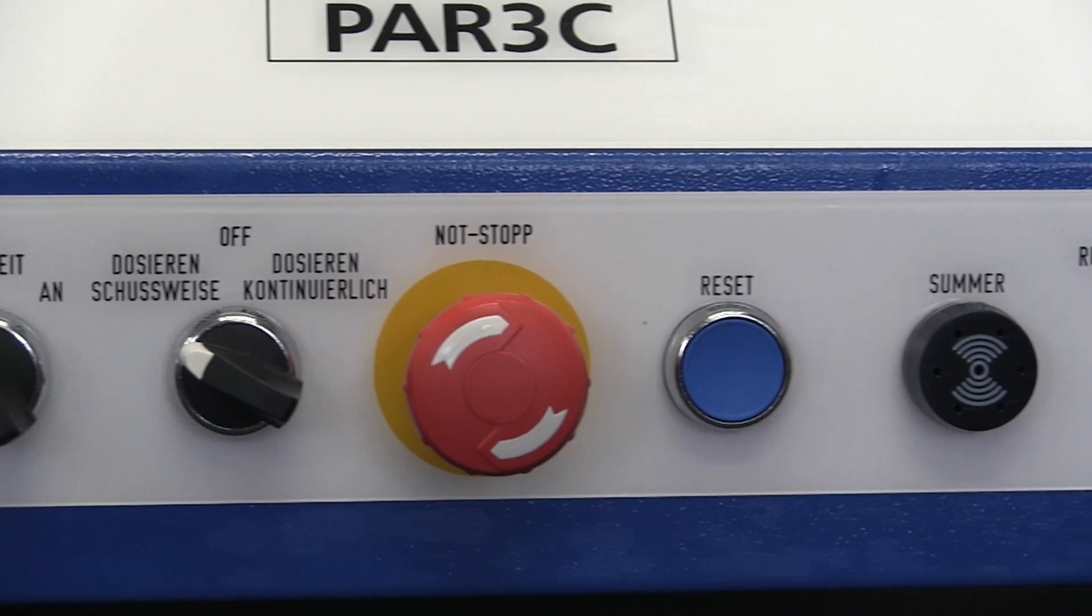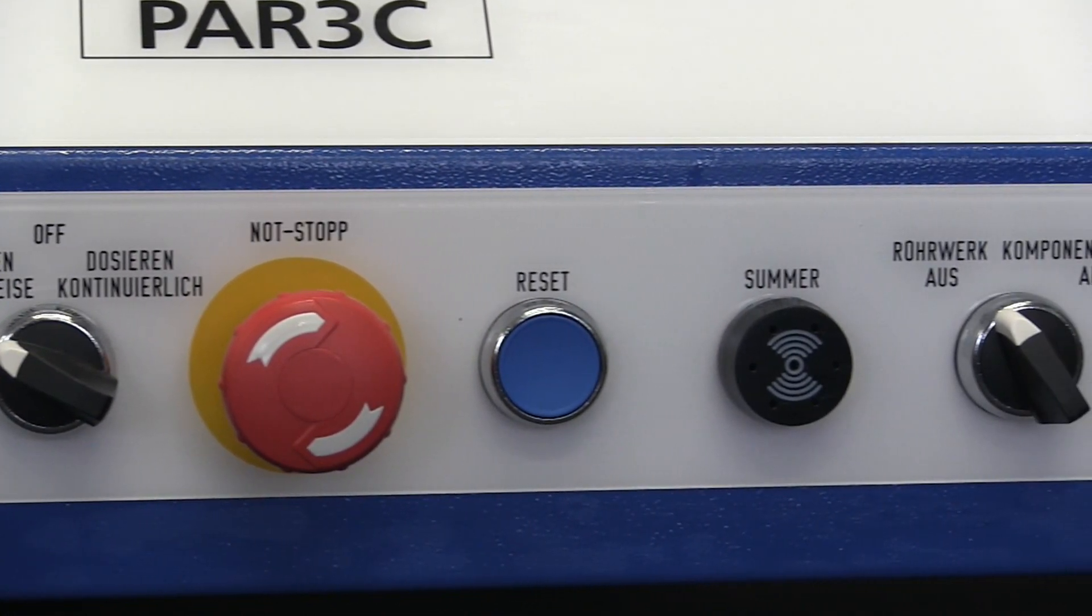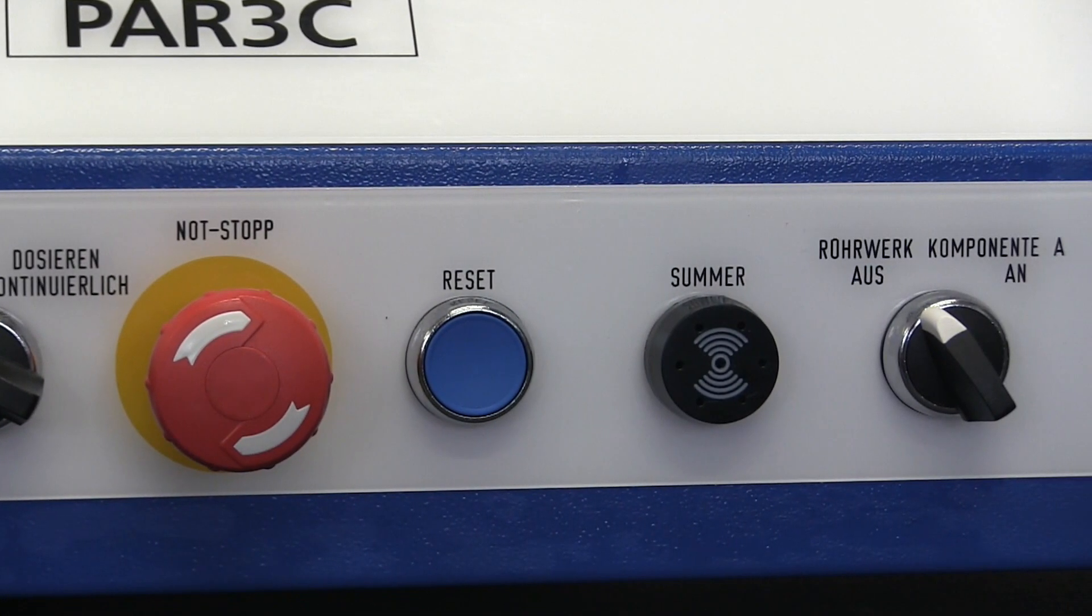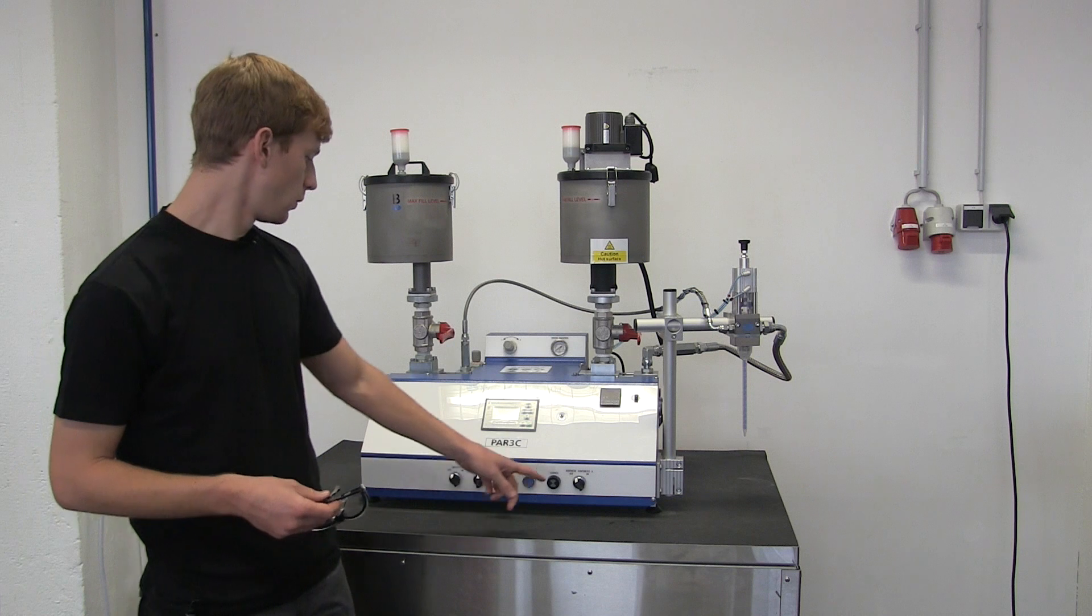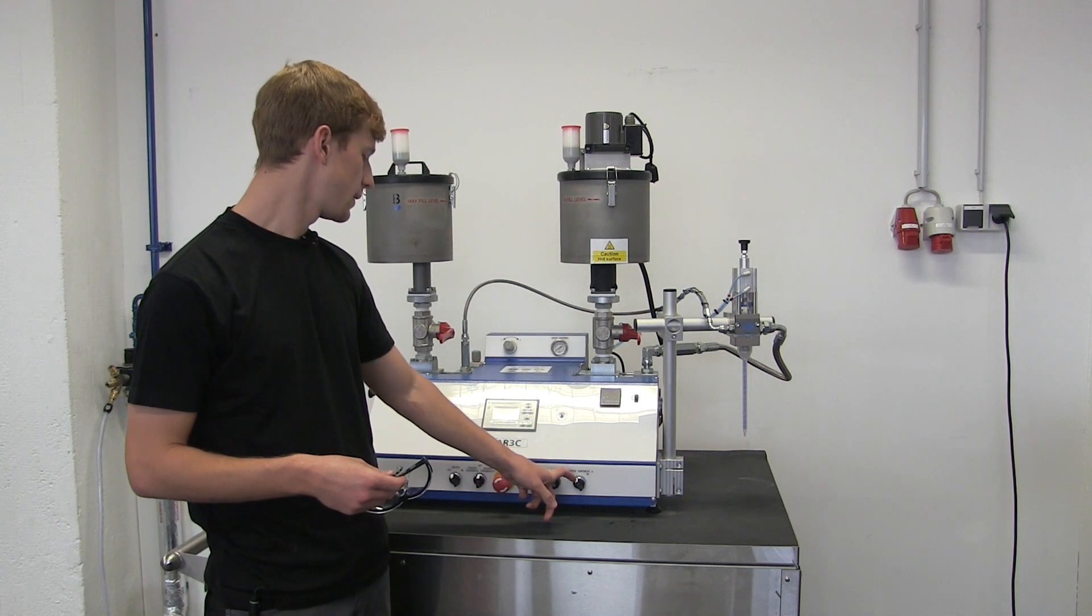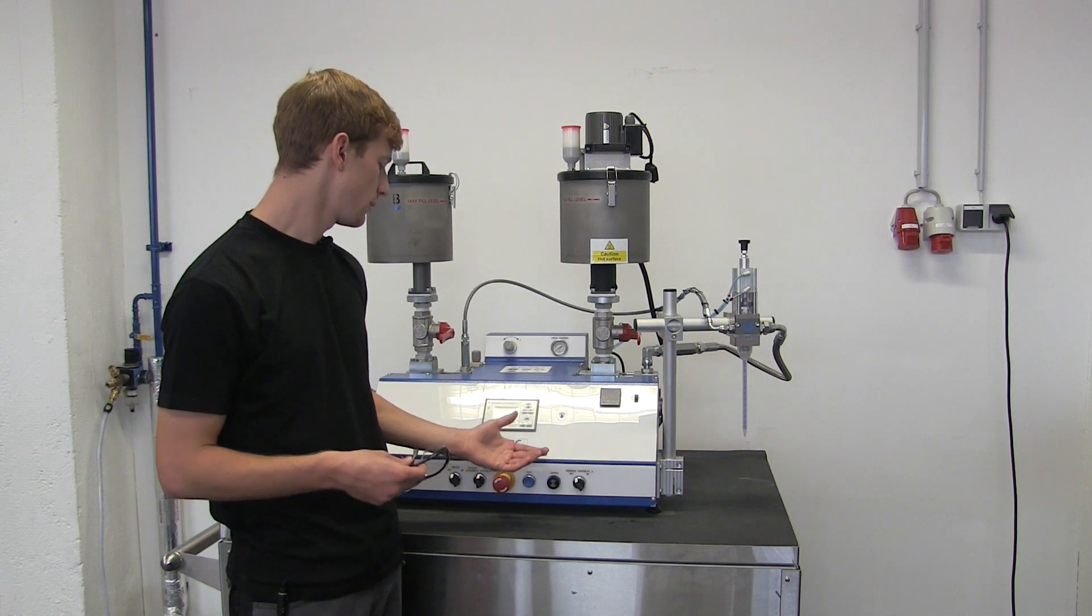There is an emergency stop button, a reset button for resetting errors, a buzzer that gives you audible feedback in case of an error message, and another switch where you can choose to switch on the agitator or heat component A.